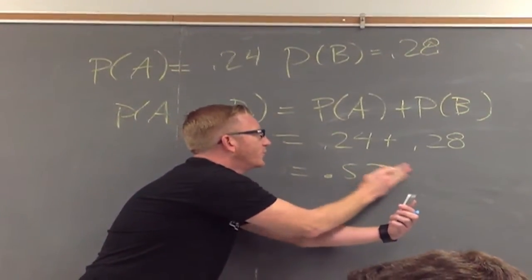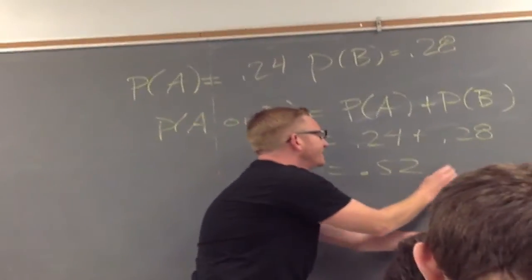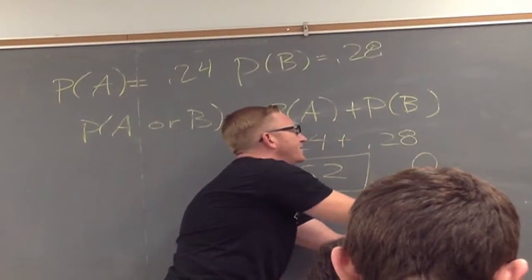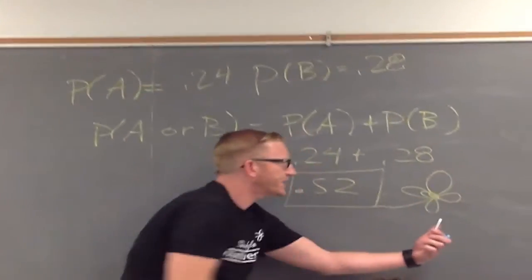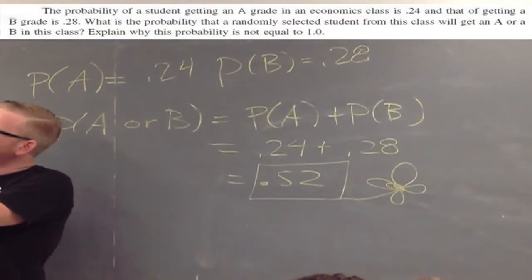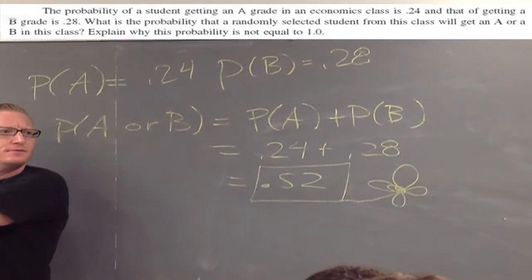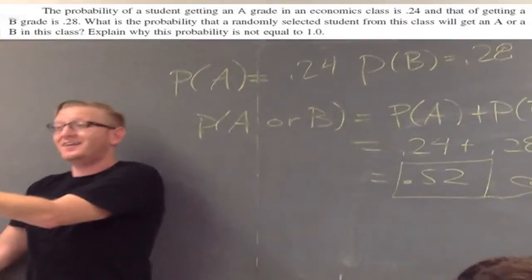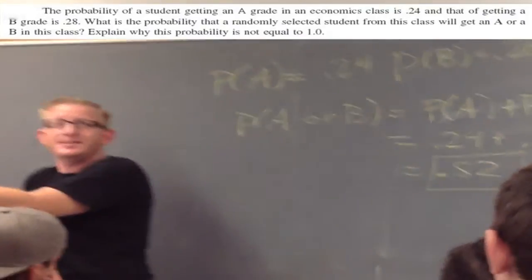Whoa! But why wasn't that probability equal to 1? Because not everybody gets A's and B's.